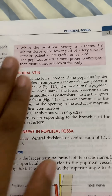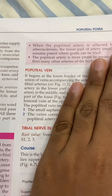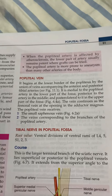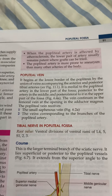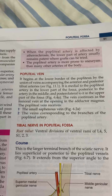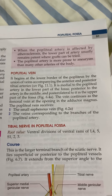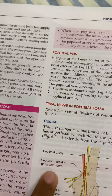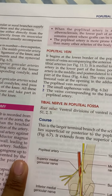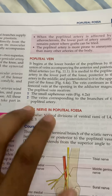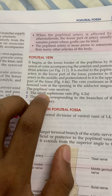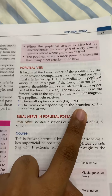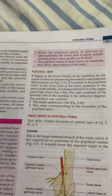Regarding the popliteal vein: it begins at the lower border of the popliteus by union of the veins accompanying the anterior and posterior tibial arteries. The relations are based on the diagram already discussed. It receives the small saphenous vein and also the veins corresponding to the branches of the popliteal artery.